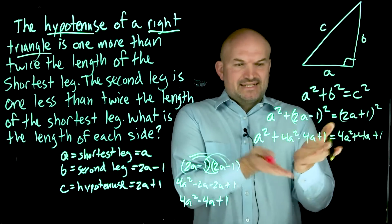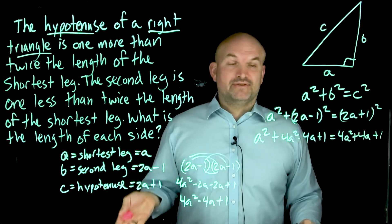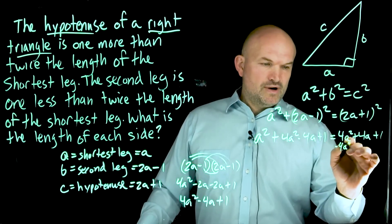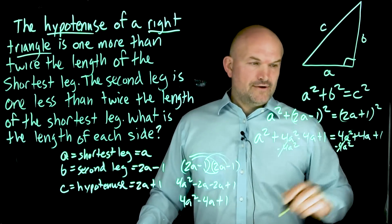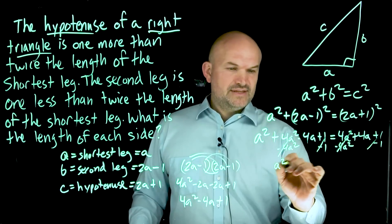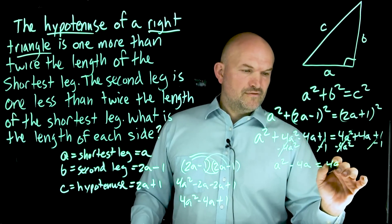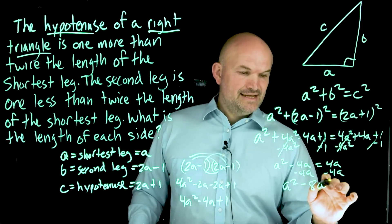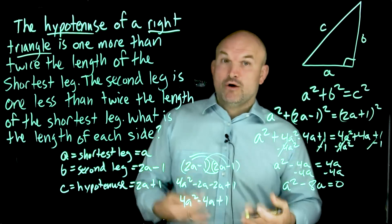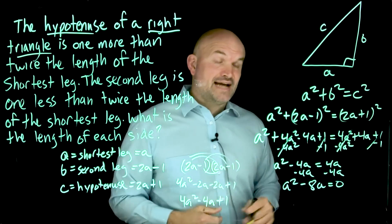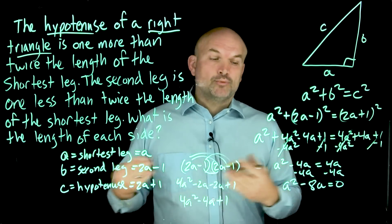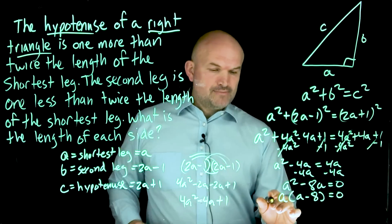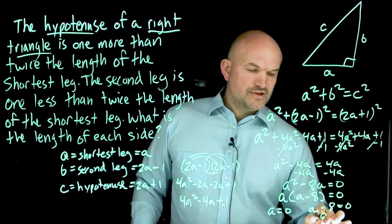Now I have A's on both sides. Subtracting 4A squared from both sides and subtracting 1 from both sides, those cancel out, leaving A squared minus 4A equals 4A. Moving the 4A over gives A squared minus 8A equals zero. I have a quadratic equal to zero. I can factor out the GCF, which is A, giving A times (A minus 8) equals zero. Applying the zero product property, A equals zero or A minus 8 equals zero, so A equals 8. Since A represents a side length, A cannot equal zero — so A equals 8.